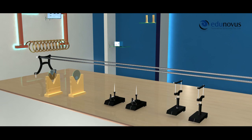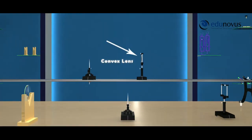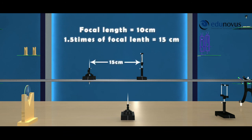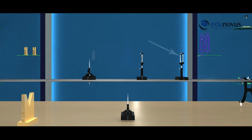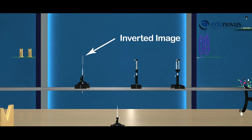Consider a convex lens and mount it on the optical bench. Place the object needle at a distance of 1.5 times the rough focal length of the given convex lens. Now mount the convex mirror on the right side of the lens. By adjusting the positions of the uprights, you will observe an inverted image of the object needle.